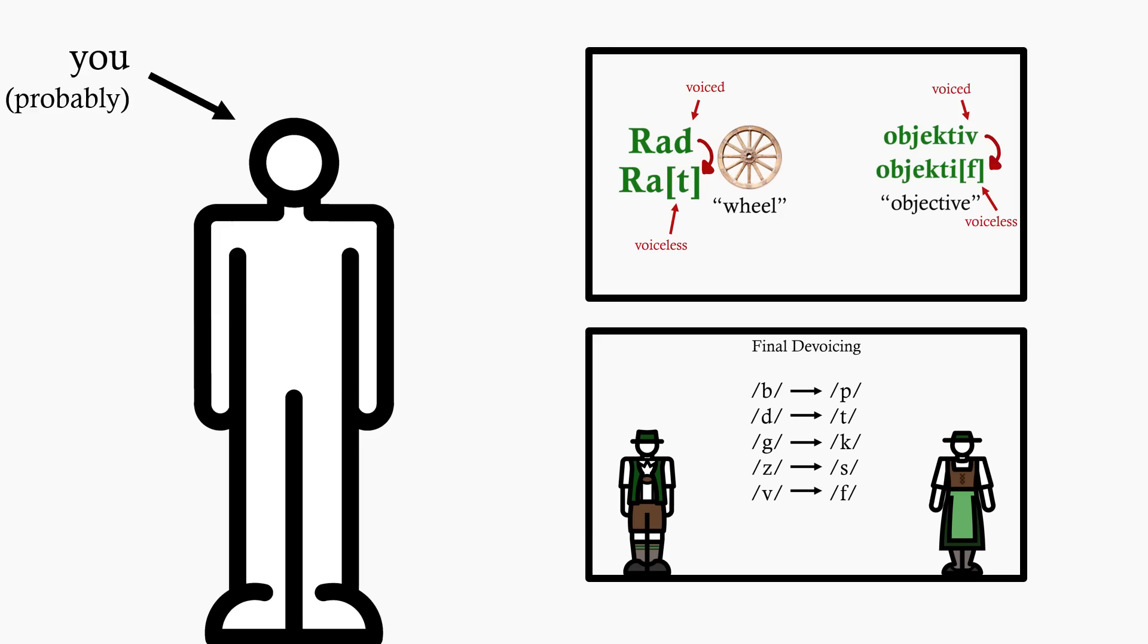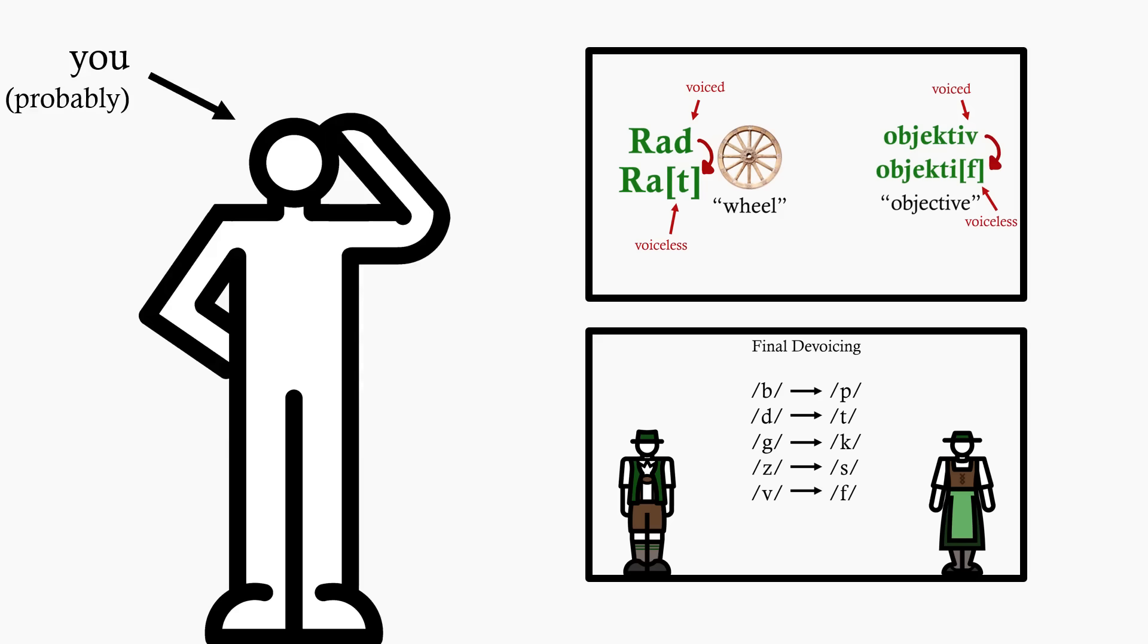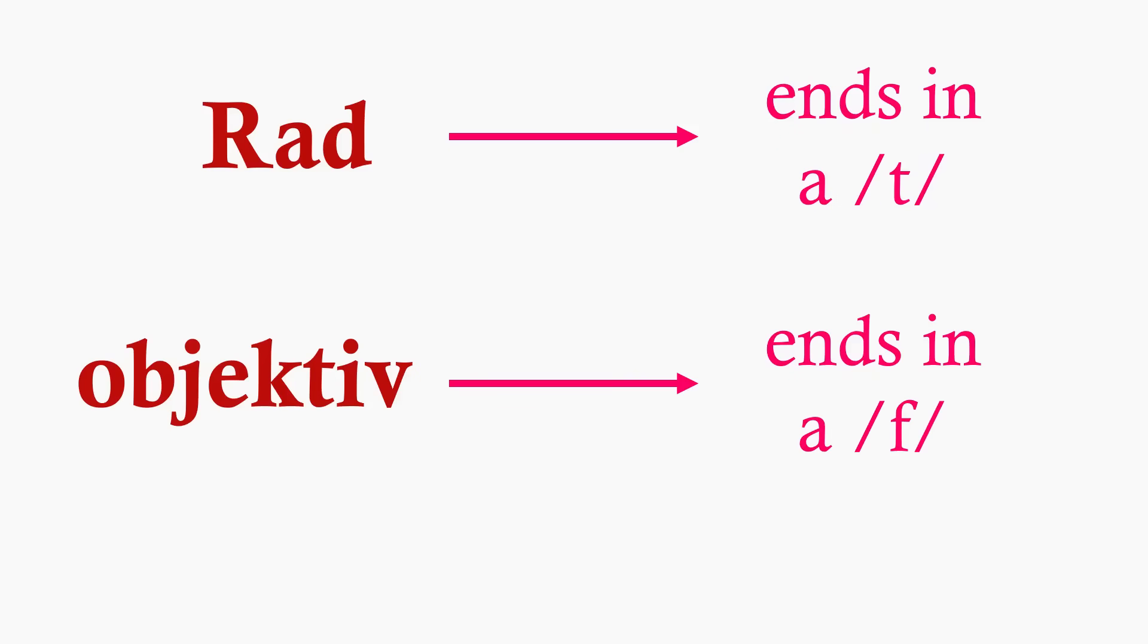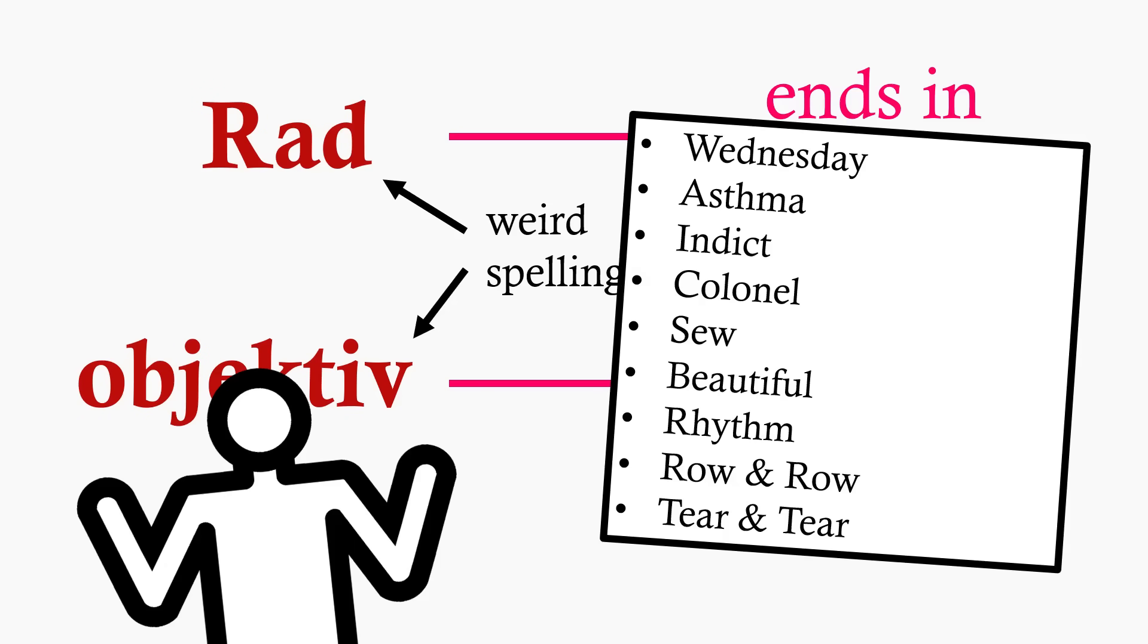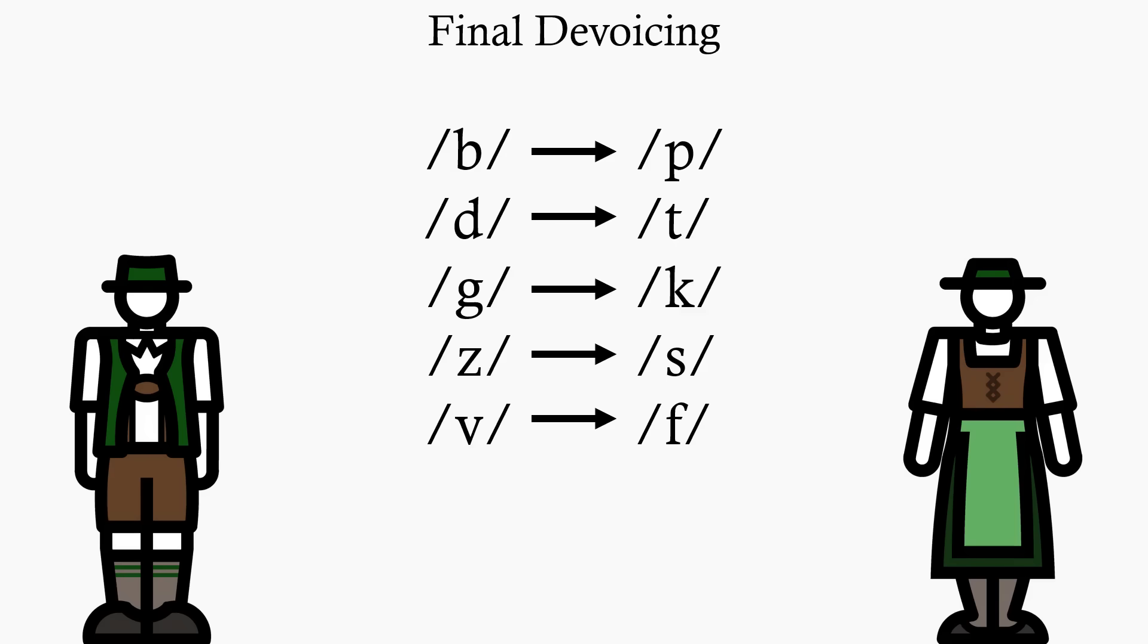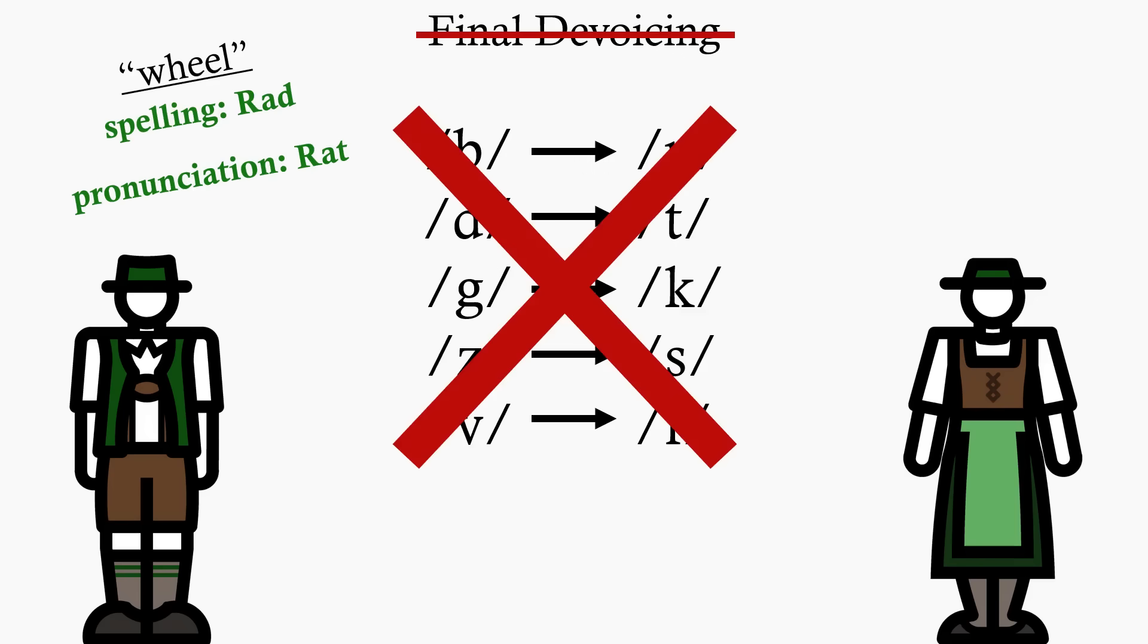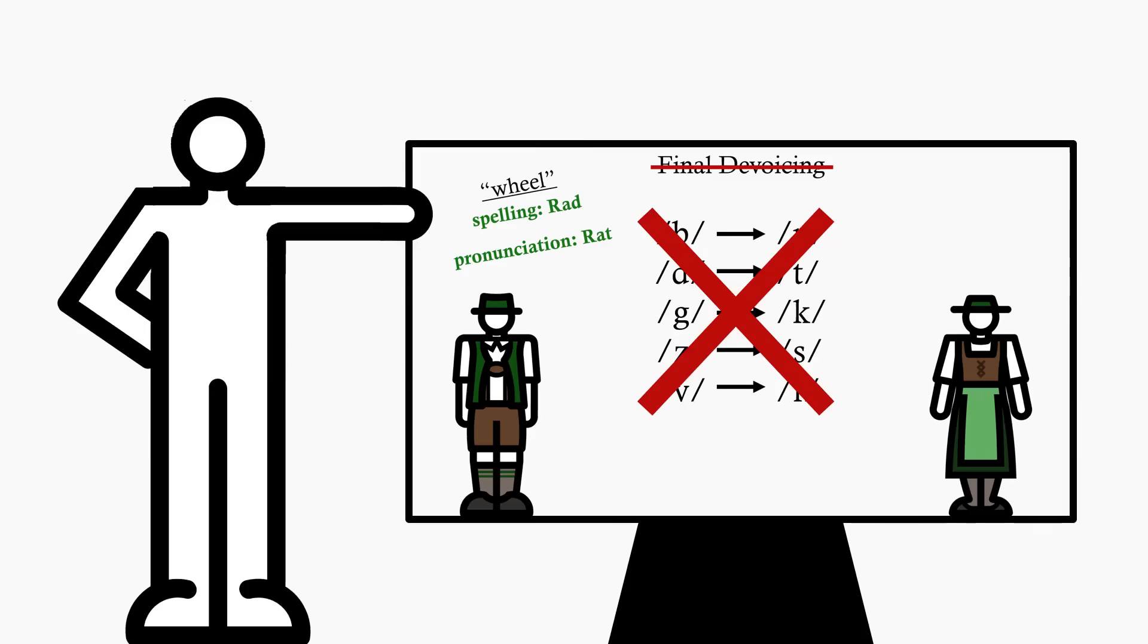But you're very smart, so when you look at this, you go hang on, can't we just say that Rath ends in a T and Objektiv ends in a F? Sure, they're spelled weirdly, but writing systems aren't always accurate to the actual language. Speakers of English are acutely aware of that. In German, there is no final devoicing. The word is just Rath. And that's very clever, but let me present you with some new data.